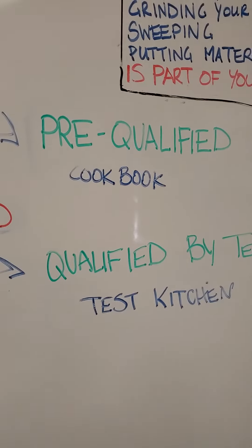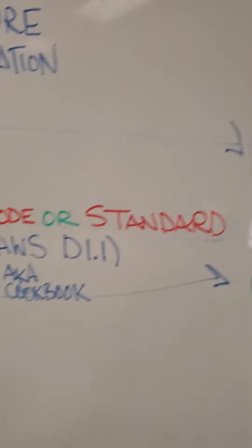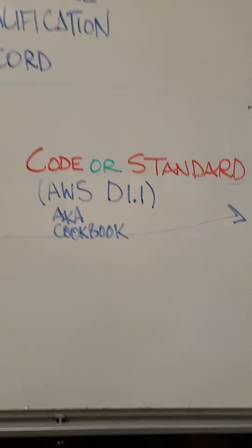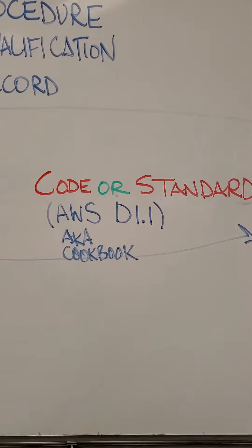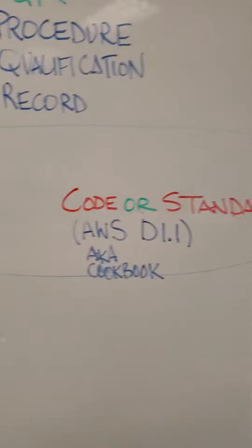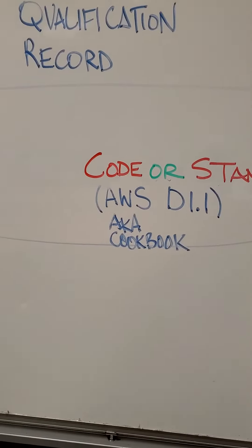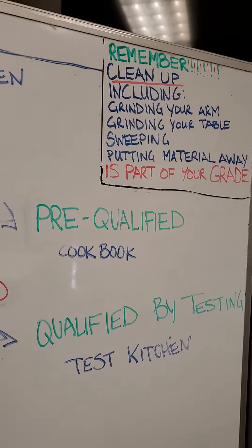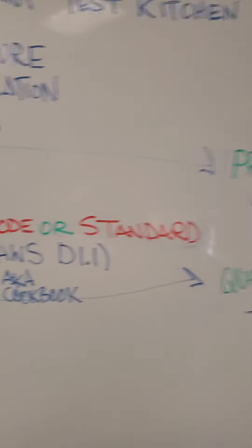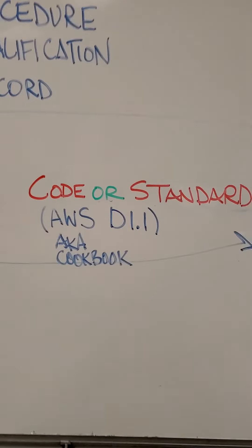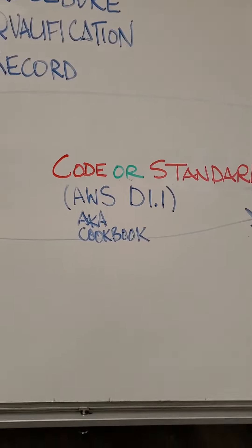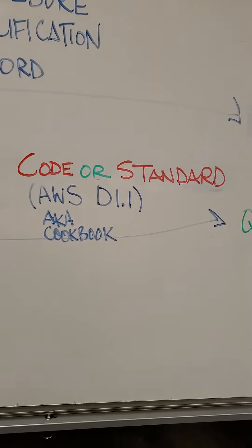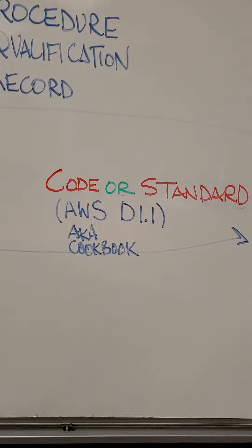So ultimately, what we have is our cookbook. This is our code standard, AWS D1.1. This means that I can take a recipe or a pre-qualified joint for my WPS out of AWS D1.1. We know that it's been tried, true, and tested, and we do not have to test it.